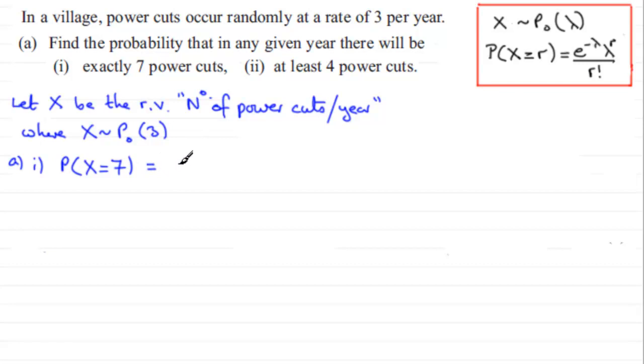But if you work it out through this method, it's going to be equal to e to the power minus lambda. The lambda, the mean is 3. So that's e to the power minus 3. And then you've got 3 to the power r, which is 7, and it's all divided by 7 factorial. And if you work that out on your calculator, what you should find you get is 0.021604. And if we round this to 3 significant figures, it's going to be 0.0216.